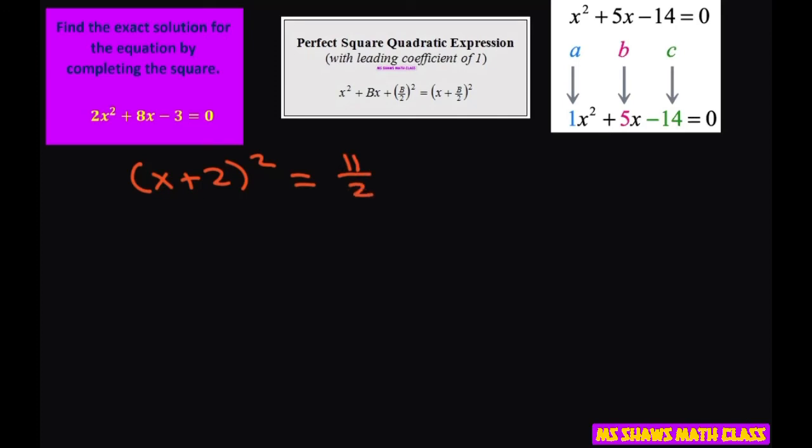Now we can solve this. So you square root both sides. And don't forget your plus and minus. So when you do plus minus, that means plus or minus. So we get x plus 2 equals plus or minus square root of 11 divided by square root of 2.